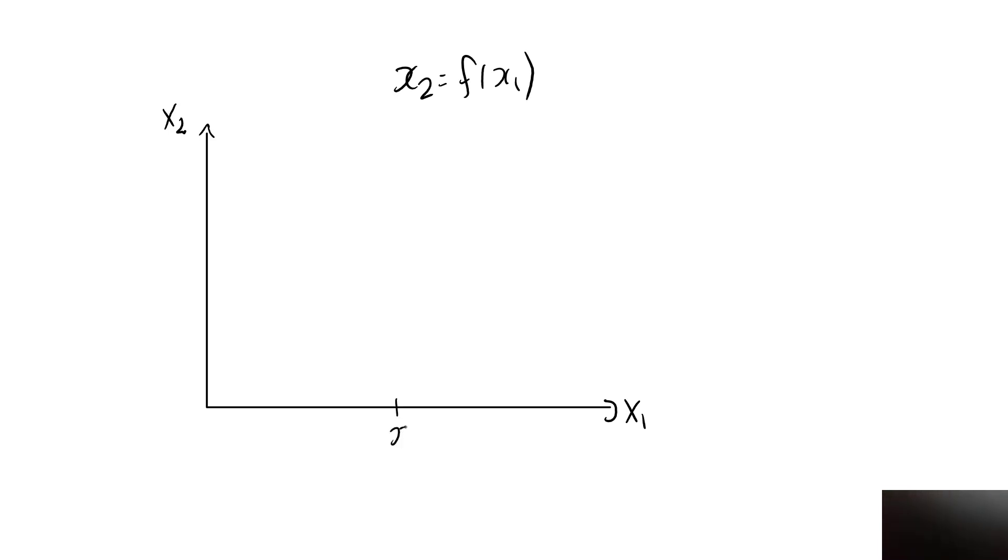So for a given value of x1, there is only one point on the graph of this function f. If the graph of the function was something like this, then we would have two points on the graph, which would not be allowed. Suppose now that my preferences are strictly monotonic. How do I know that there can be at most one bundle containing this much of good one on a given indifference curve?